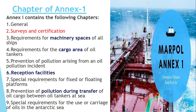Now let's see what are the chapters of Annex 1. Annex 1 can be broadly classified into nine chapters. Chapter 1 is General. Chapter 2 is Survey and Certification, covering how surveys are carried out. Chapter 3 covers requirements for machinery spaces, including regulations 14 and 15. Cargo area requirements cover slop tanks and reception facilities. Additional chapters address how oil pollution can be prevented during the transfer of oil cargo between ship and shore, which relates to ship-to-ship and STS operations.